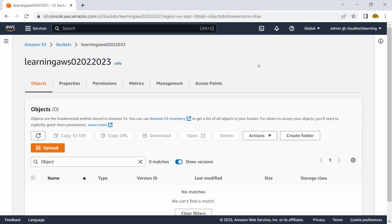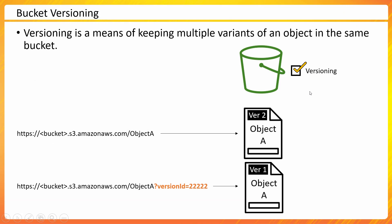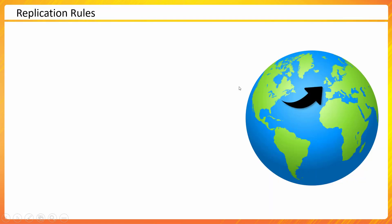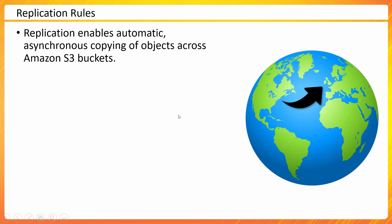Let's talk about some more additional features of Amazon S3. One of them is called replication. Replication can be very useful if you want to keep multiple copies of your data. You configure rules that enable automatic asynchronous copying of objects across Amazon S3 buckets — that is the keyword here.